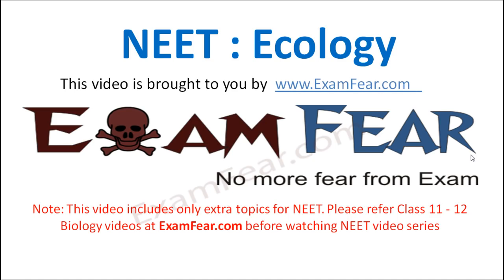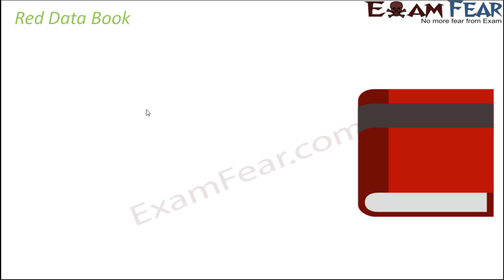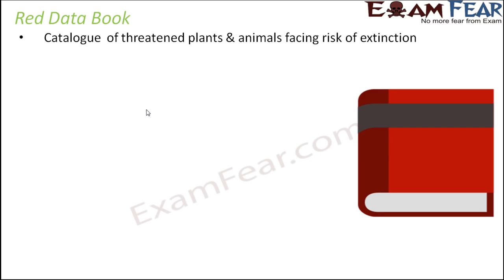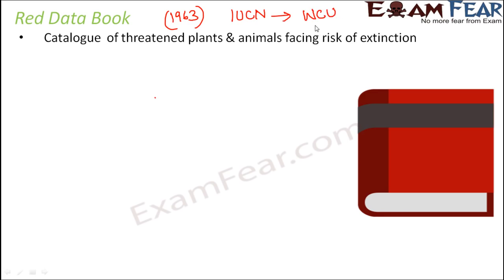Hello friends, this video on NEAT Ecology is brought to you by examfear.com. We often hear the term 'red data book' when we talk about conservation of biodiversity. The red data book is basically a catalogue of threatened plants and animals which are facing risk of extinction. This concept was introduced in 1963 by IUCN — the International Union for Conservation of Nature and Natural Resources — now replaced with WCU, the World Conservation Union.